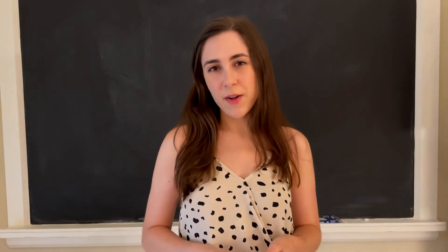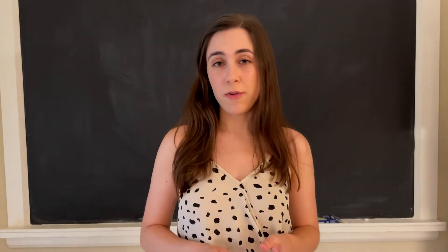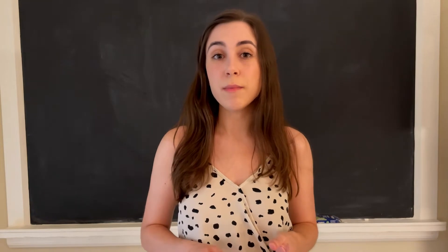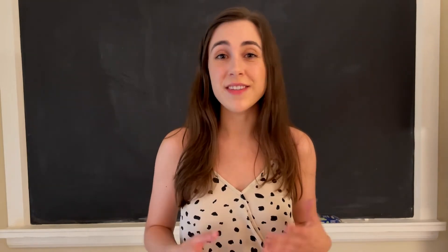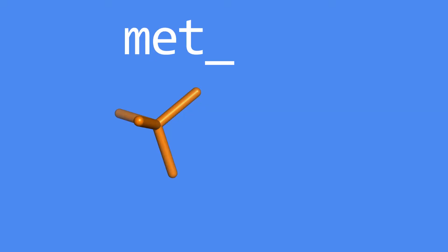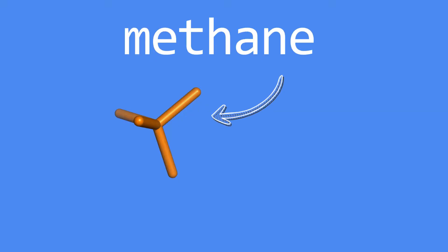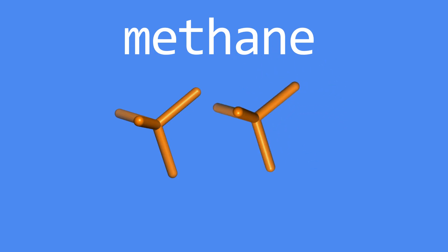So what does this have to do with symmetry? Well, almost all amino acids are chiral. So if you took the mirror image of one of these molecules, it wouldn't match the original molecule. They have a so-called handedness. In contrast to a molecule like methane, which would match its mirror image — it's achiral.